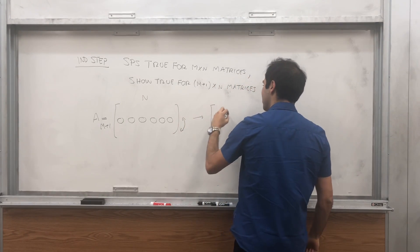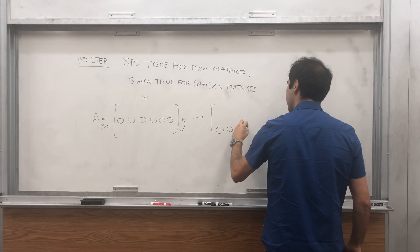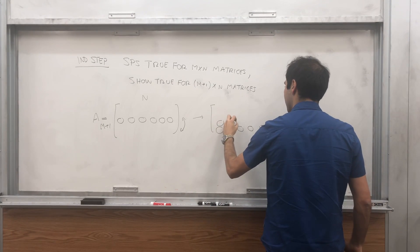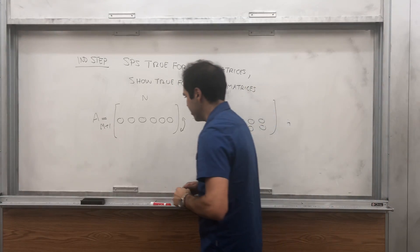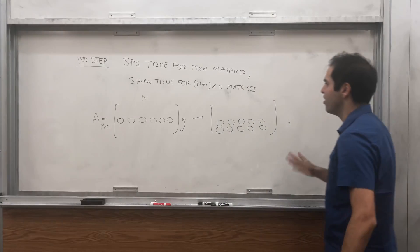well then just interchange the rows and put that row of zeros at the bottom. So by interchanging, we can make sure that all the zeros are at the bottom.